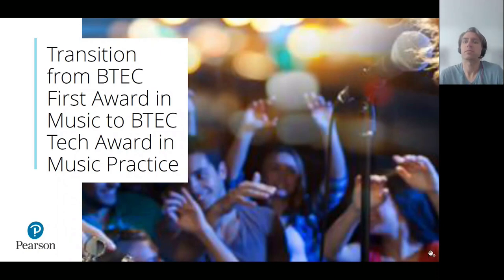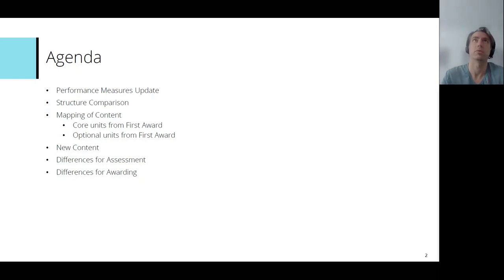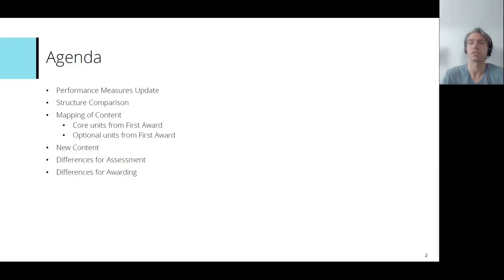So we'll get underway. Have a look at the agenda. I'll give a brief update on the performance measures as it currently stands. We can have a look at the structure and comparison between the tech award and the first award, then look at the mapping of content between the first award and the tech award, have a look at some of the new content built into the tech award, and then look at the differences between the assessment and awarding of the qualification.